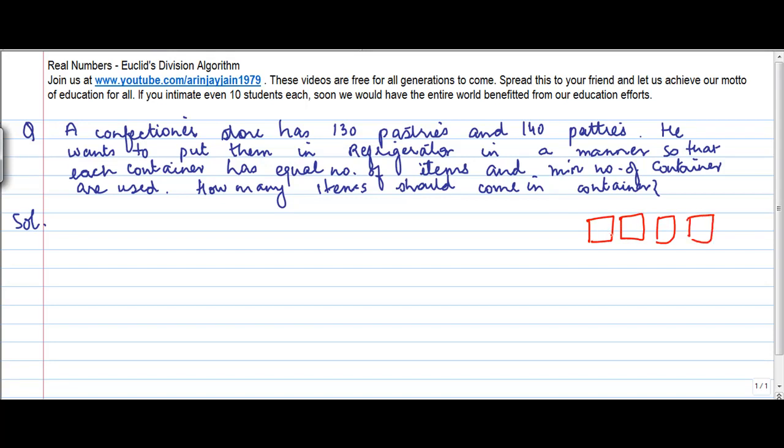Let's say you put in 10 items in each of them. So there are 270 items in all which is 130 plus 140. So what he says is how many items should be put in each container.